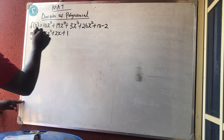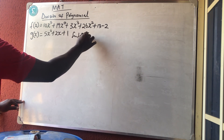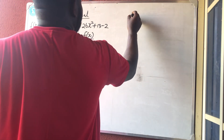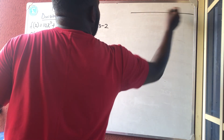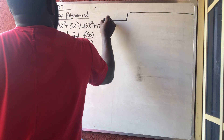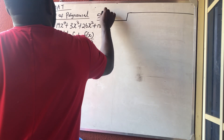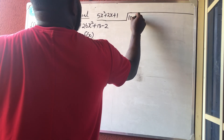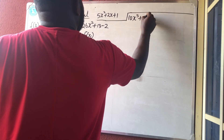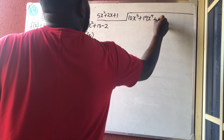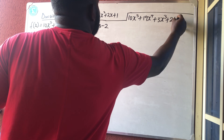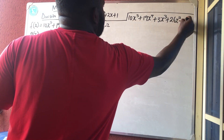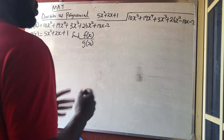From part B, they say that if f(x) is given, find f(x) divided by g(x). Now we're going to do this as long division. I'm going to have 5x² + 2x + 1 as the divisor, and 5x⁵ + 19x⁴ + 3x³ + 26x² − 13x − 2 as the dividend.